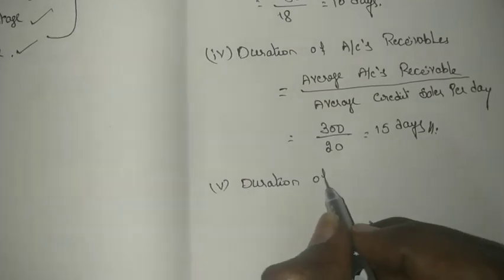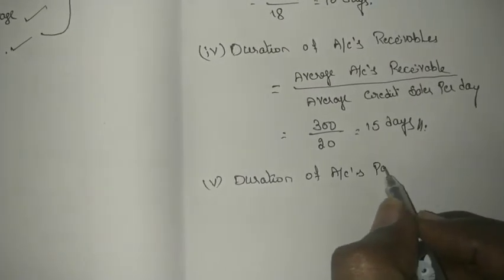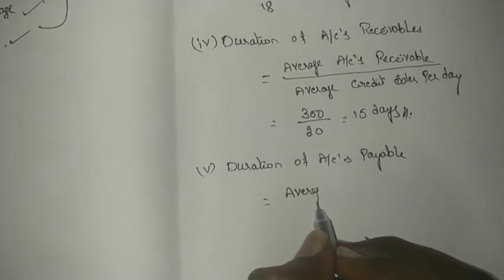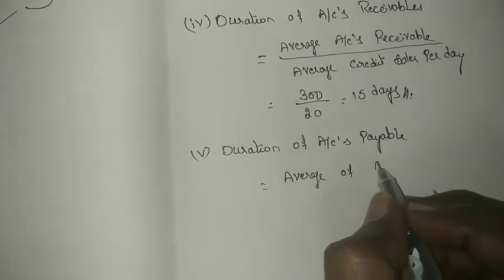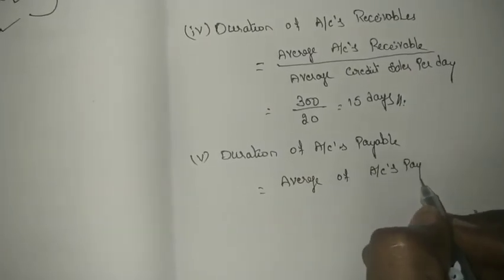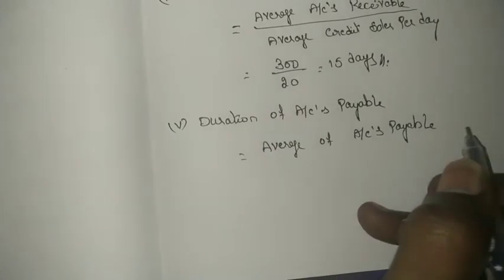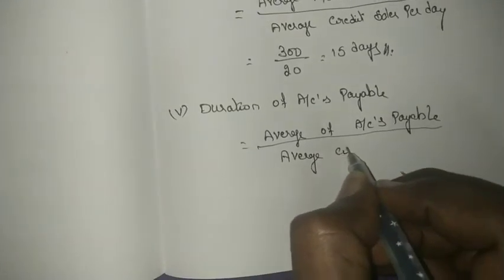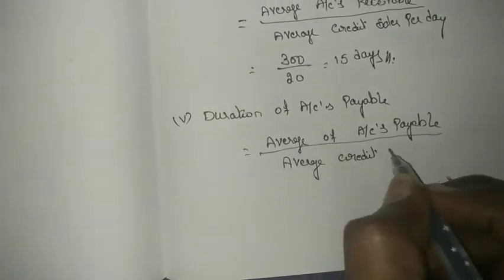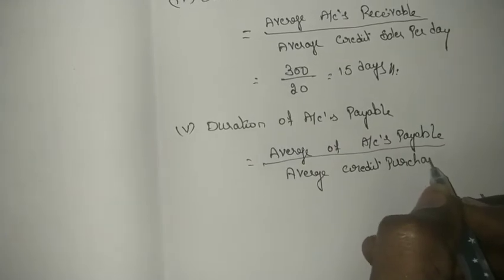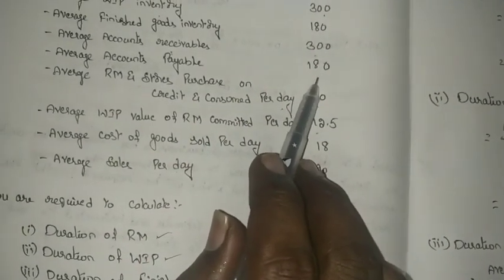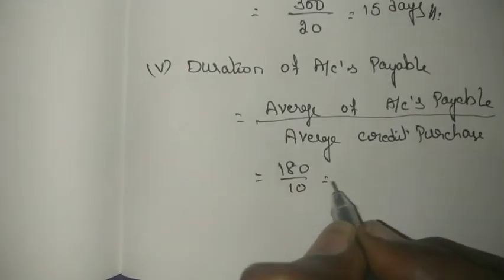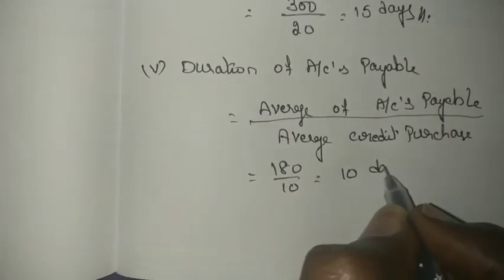Next, the duration of accounts payable. The formula is: average accounts payable divided by average credit purchases per day. In the problem, average accounts payable is 180 and credit purchases per day is 10. So 180 divided by 10 gives a duration of accounts payable of 18 days.